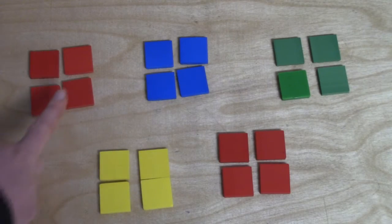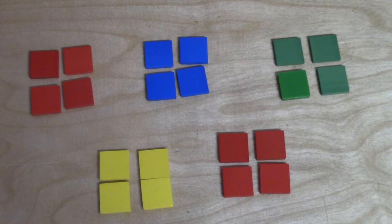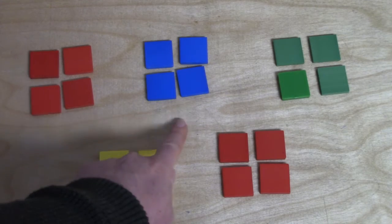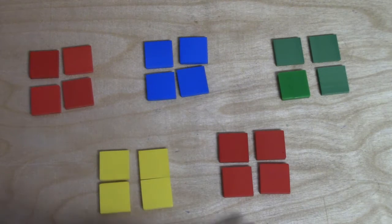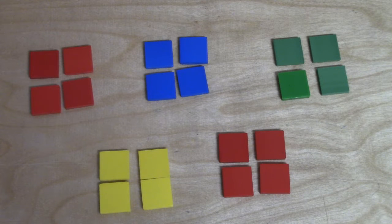Three groups of four is twelve. What about one, two, three, four, five groups of four? Let's sing. Four, eight, twelve, sixteen, twenty.